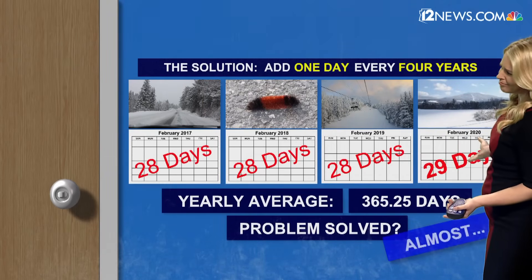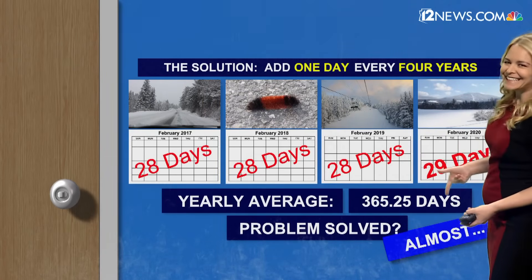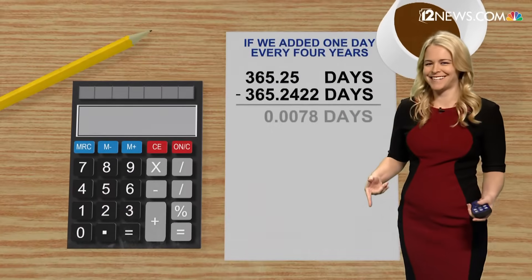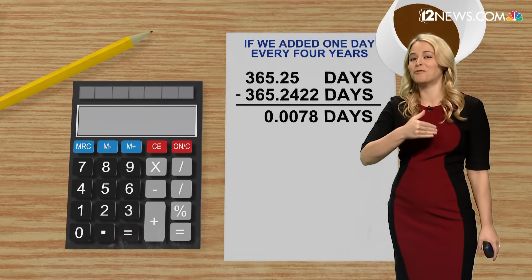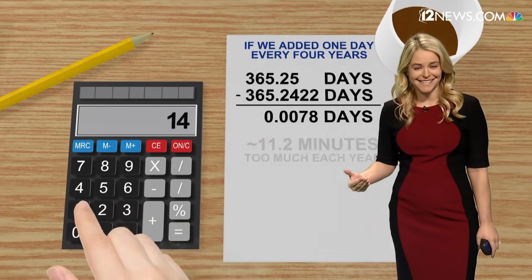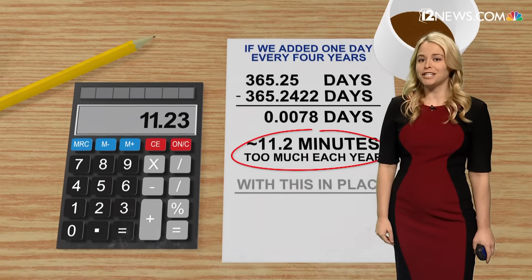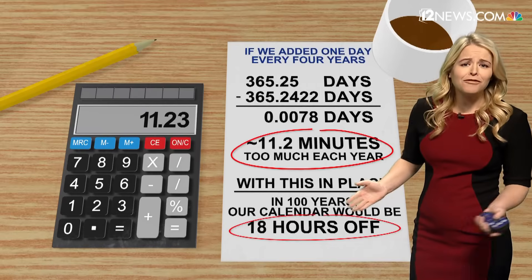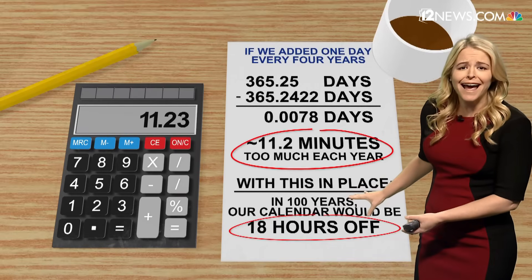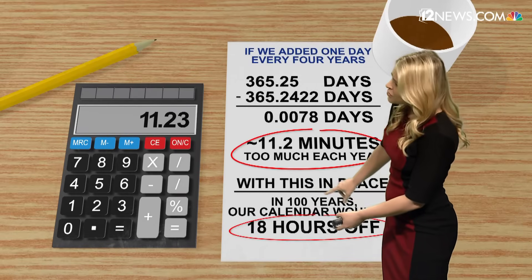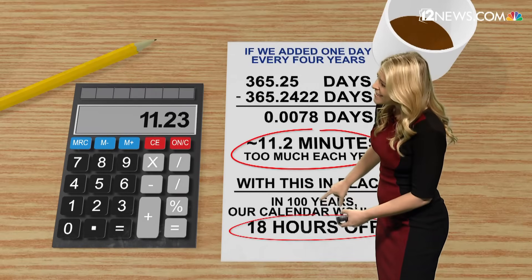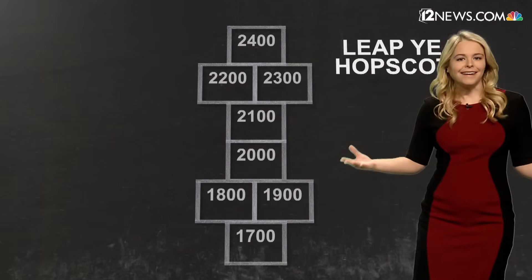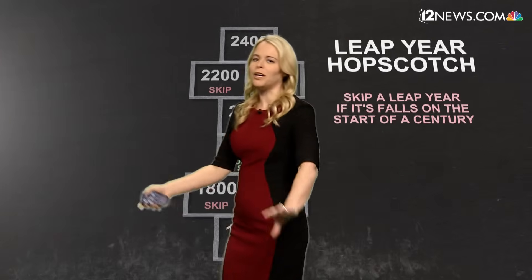Problem solved, right? Almost — still not entirely, because even with that in place, at this rate in 100 years we would still be off by 18 hours. So that 18 hours needs to be taken into account as well.